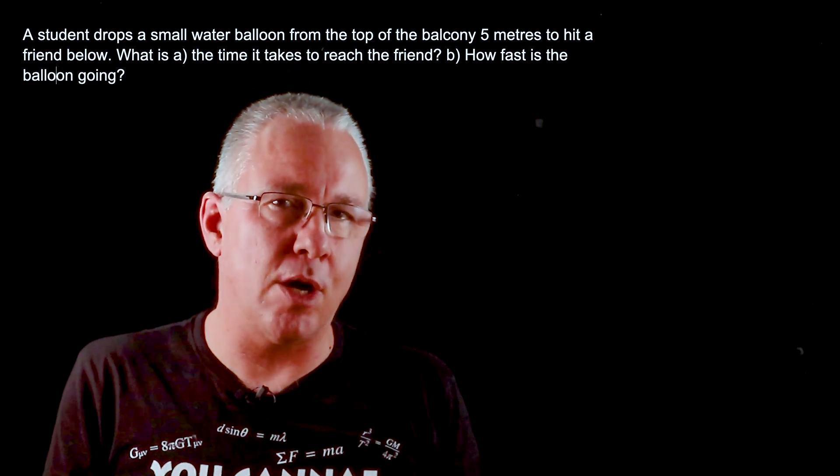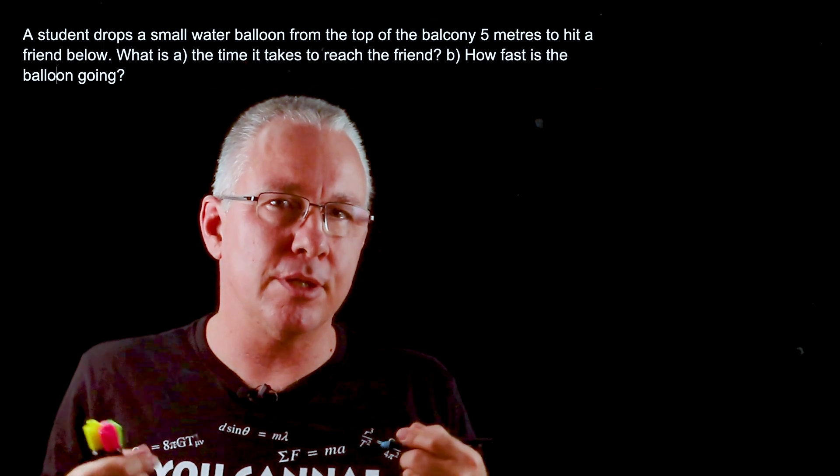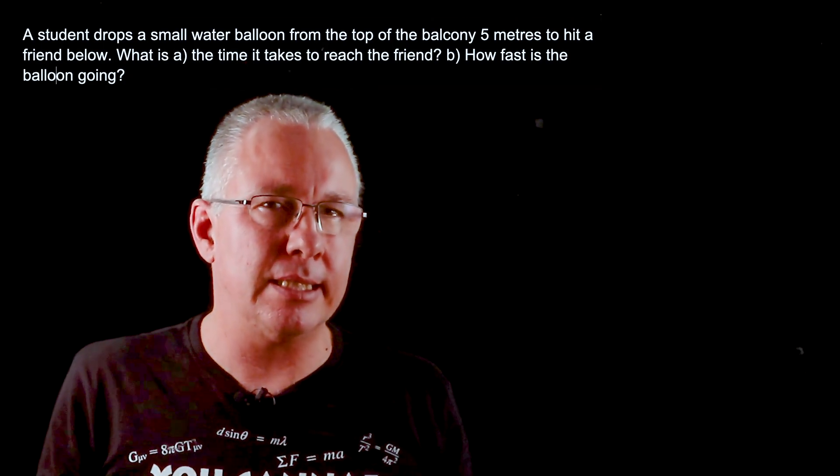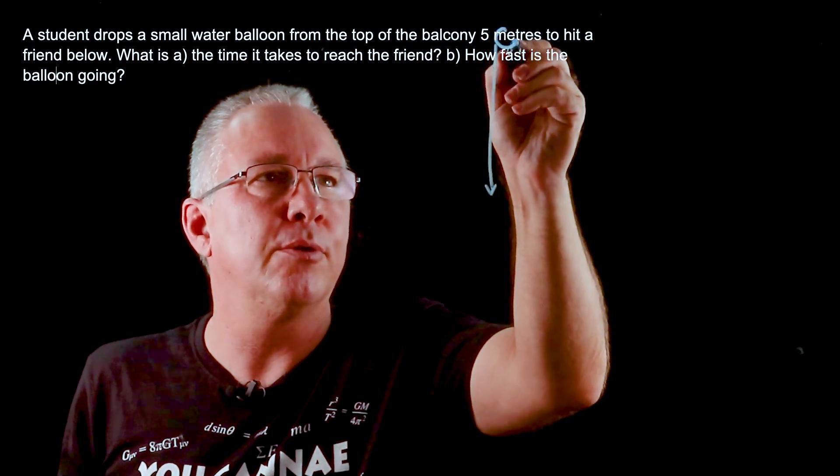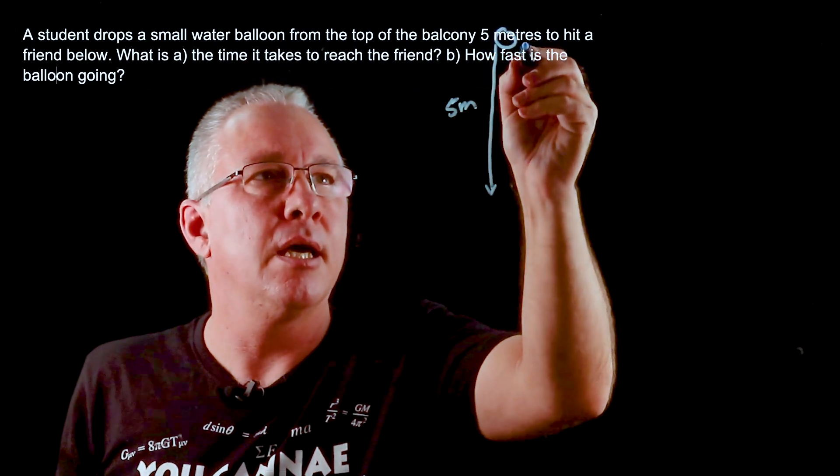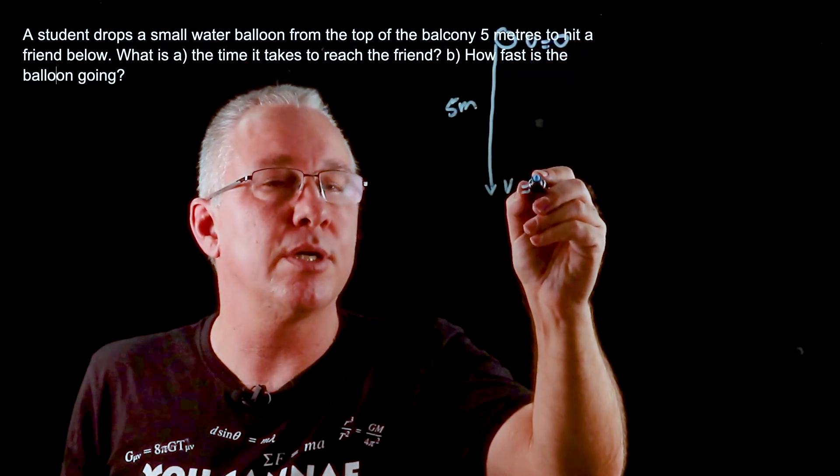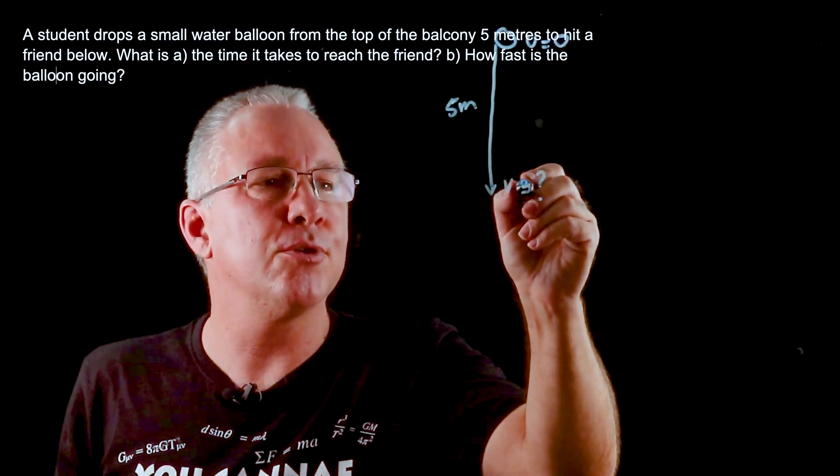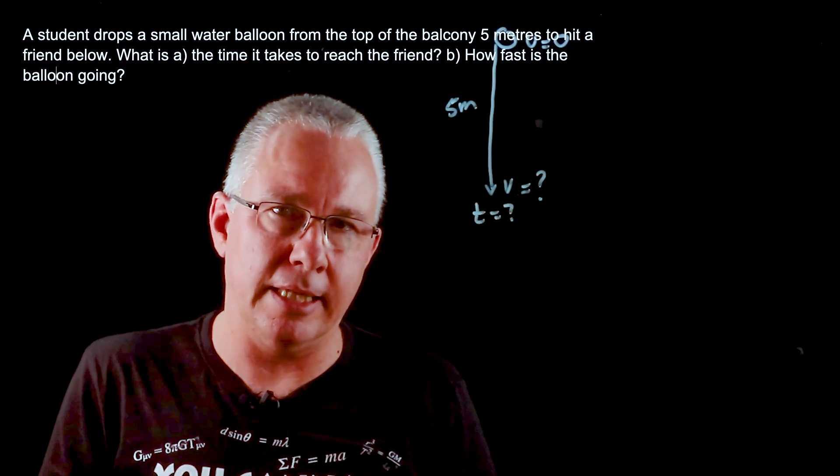With a standard equation of motion problem, I always ask my students to draw a diagram so you can annotate it and make it easier to see what's going on. I have a displacement of five meters. I know my initial velocity is zero, my final velocity is what I'm looking for, and I also need to work out the time it takes to get there.